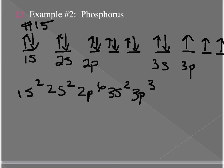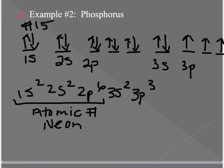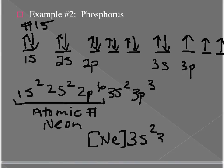Here's one way to shorten that configuration. The portion through 2p⁶ corresponds to atomic number 10, which is neon. We use elements in group 18 as reference points because they are unreactive and very stable. So the shortened electron configuration is written as [Ne] 3s², 3p³.